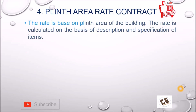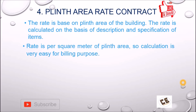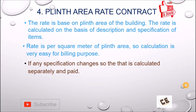The fourth type is the plinth area rate contract. In this contract, the rate is based on the plinth area of the building. The rate is calculated on the basis of description and specification of items — all calculations are done previously, and on that basis a plinth area rate is determined. The rate is per square meter of the plinth area. Calculation is very easy: just calculate the plinth area and multiply by the rate per square meter or per square foot to get the value. If any specification changes, that is calculated separately and paid.